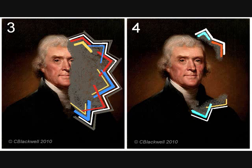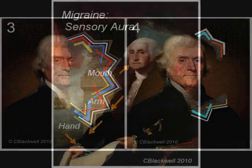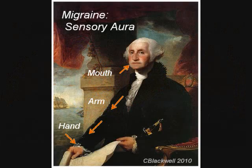Rarely there can be a blackout of vision, but that must be distinguished from other worrisome causes, like stroke. Some people have an aura that is not visual. Instead, it involves sensations of numbness and tingling that march down the arm, or numbness of the hand, or around the mouth.